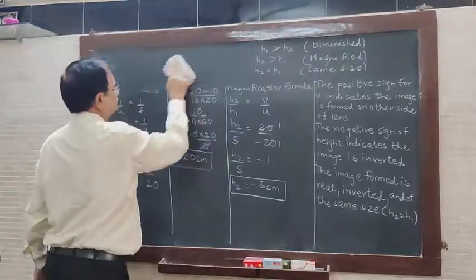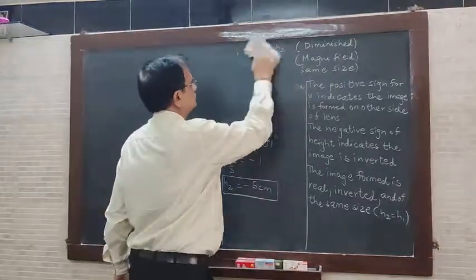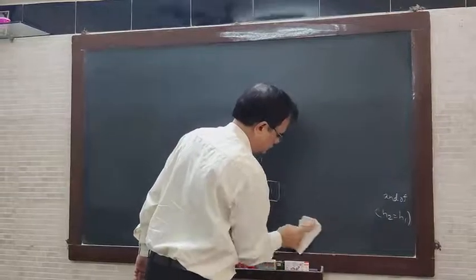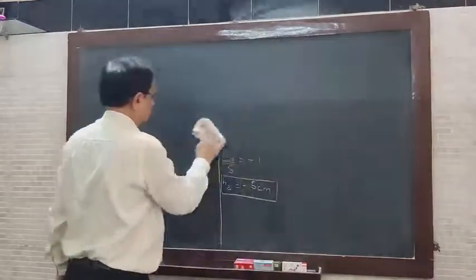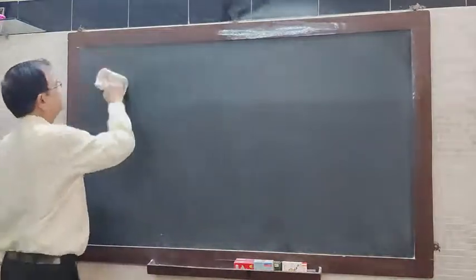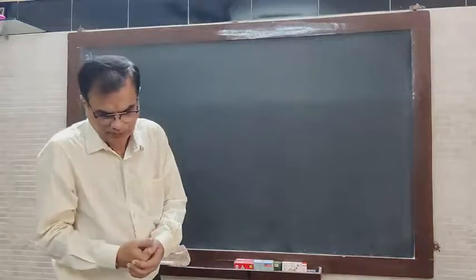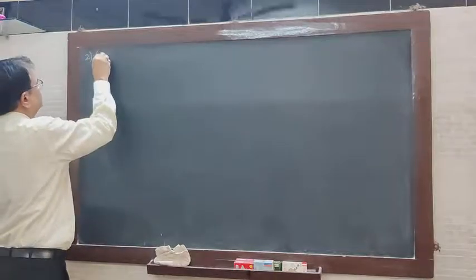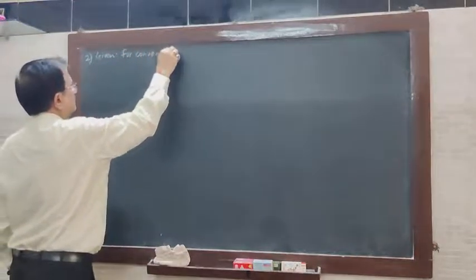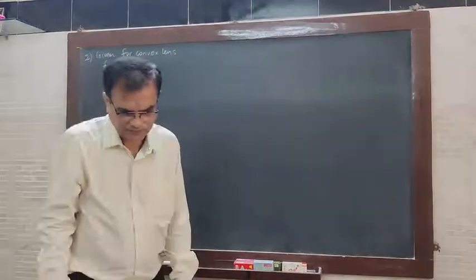We will do example number 2. The focal length of a convex lens is 20 cm. So, given a convex lens with focal length equal to plus 20 cm. What is its power?